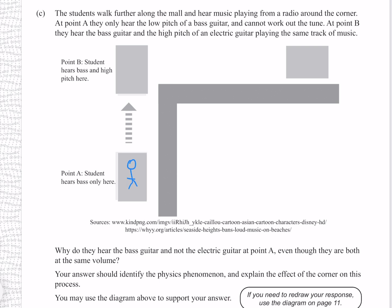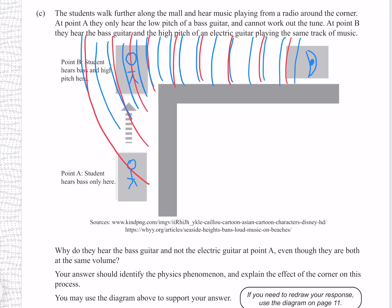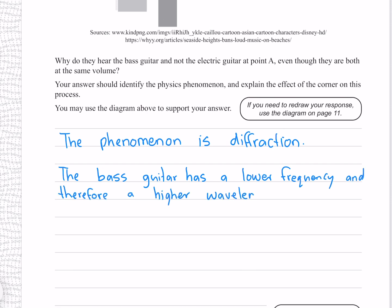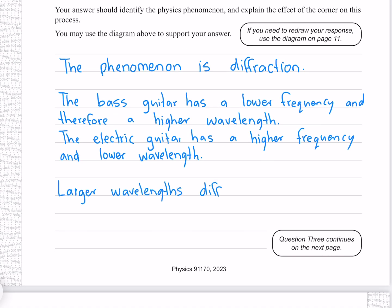And so we have our student and our speaker. And if we imagine the waves from our bass guitar, which are going to have a relatively long wavelength, at the corner they are going to diffract around. Whereas the higher frequency electric guitar has a shorter wavelength and so is not going to diffract as much. The phenomenon is diffraction. The bass guitar has a lower frequency and therefore a higher wavelength. The electric guitar has a higher frequency and lower wavelength. Larger wavelengths diffract further, allowing the bass guitar to be heard at point A.